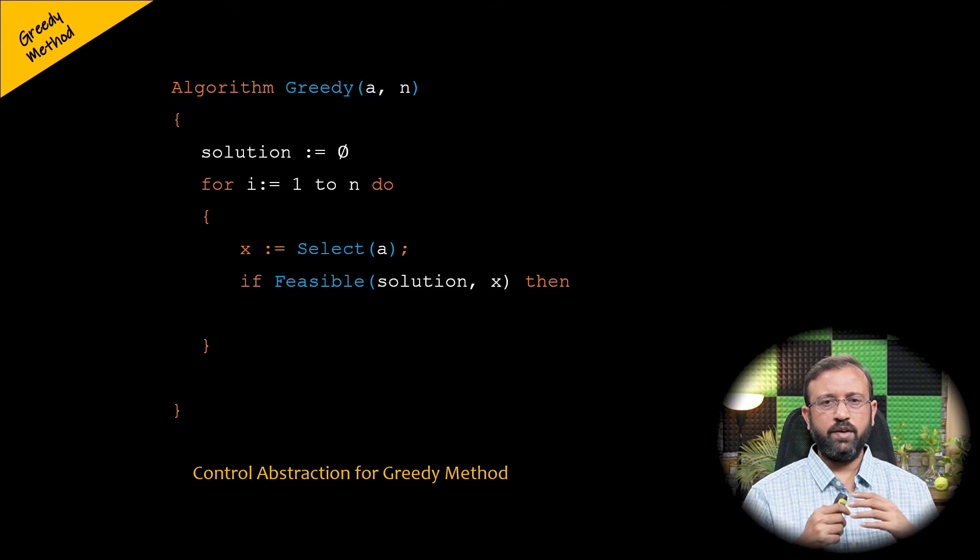So if the solution x is feasible then it is included in the solution set using the union function within the if statement. Otherwise the input is removed and never considered again, and the for loop is executed again for considering the next solution.